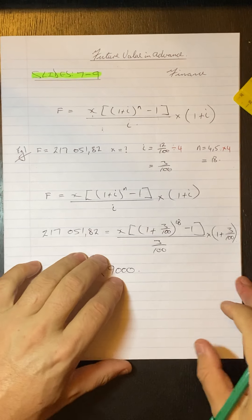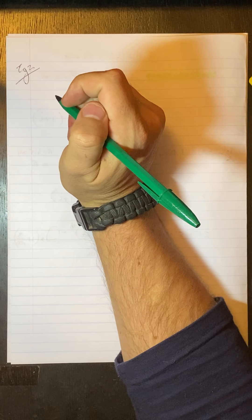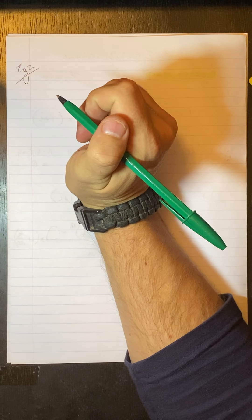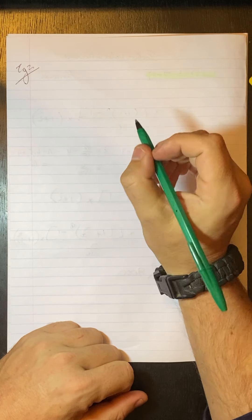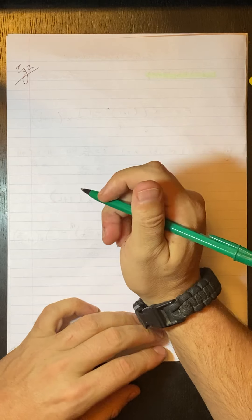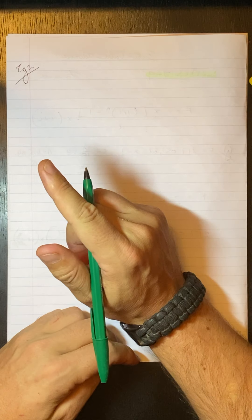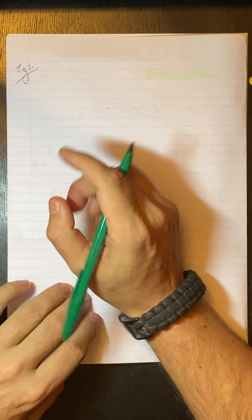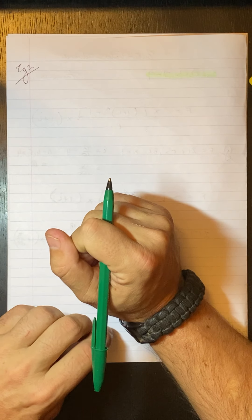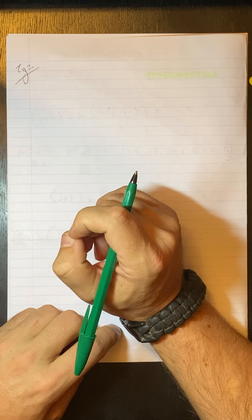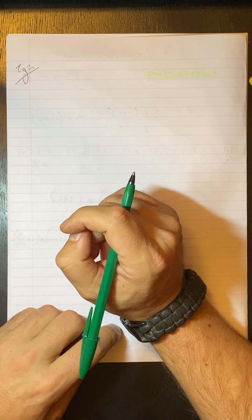Moving on to example two: 1,000 euros is invested in the CAC 40 index of the Paris Stock Exchange on the first of every month — there's our keyword 'the first' — so we know we're going to be using our future value in advance formula. Calculate the value of the investment immediately after the 27th payment.